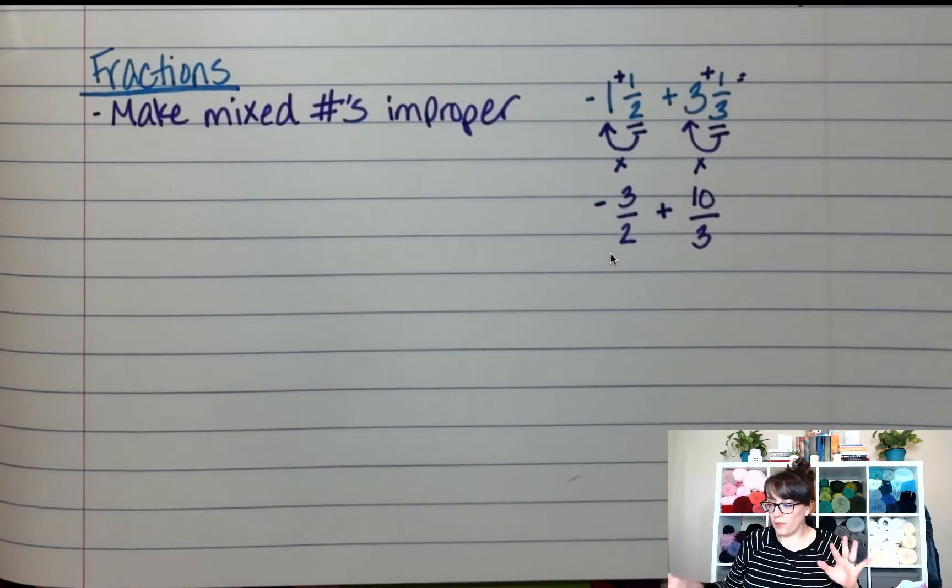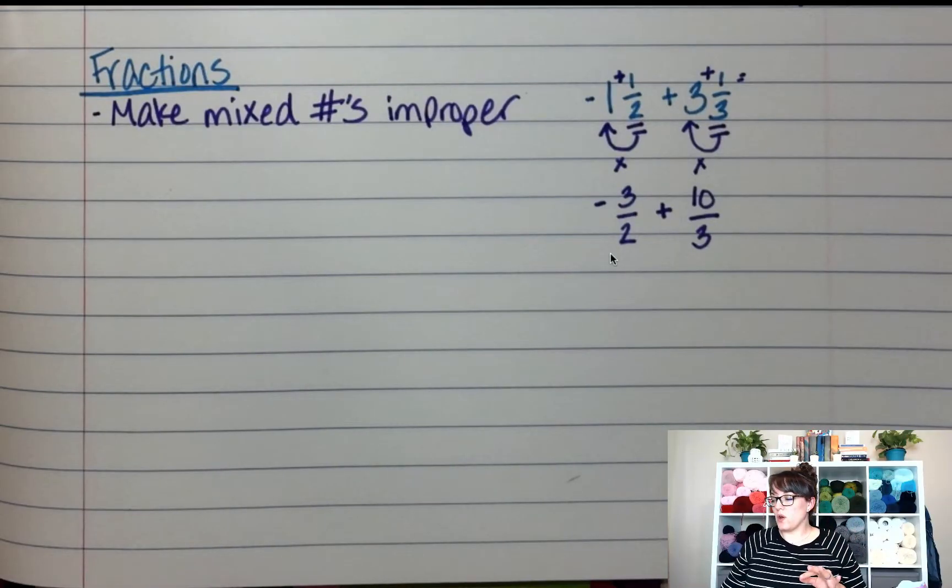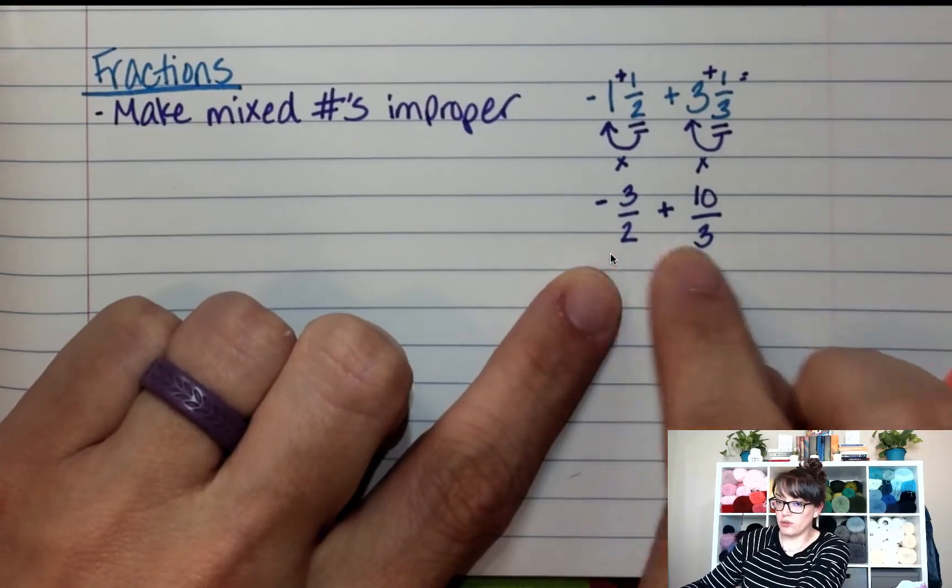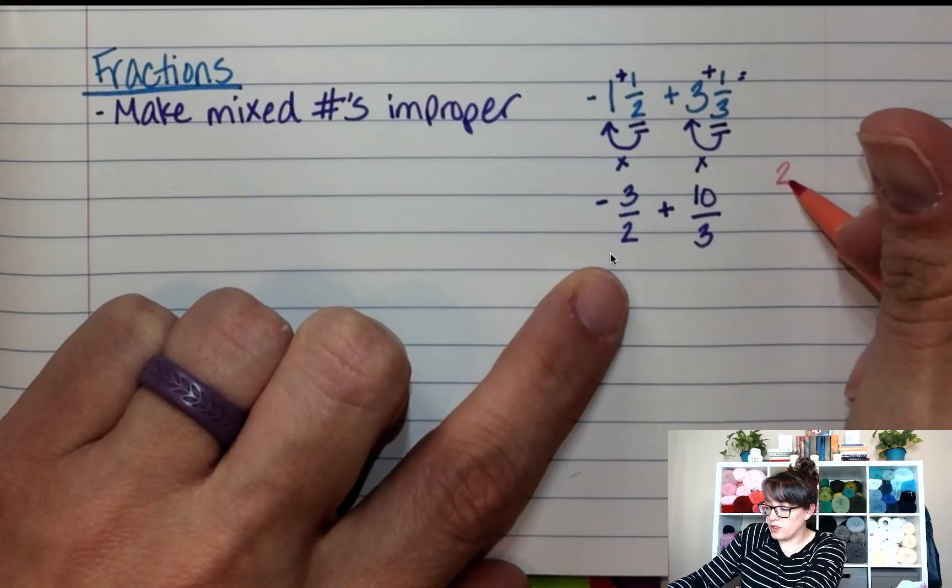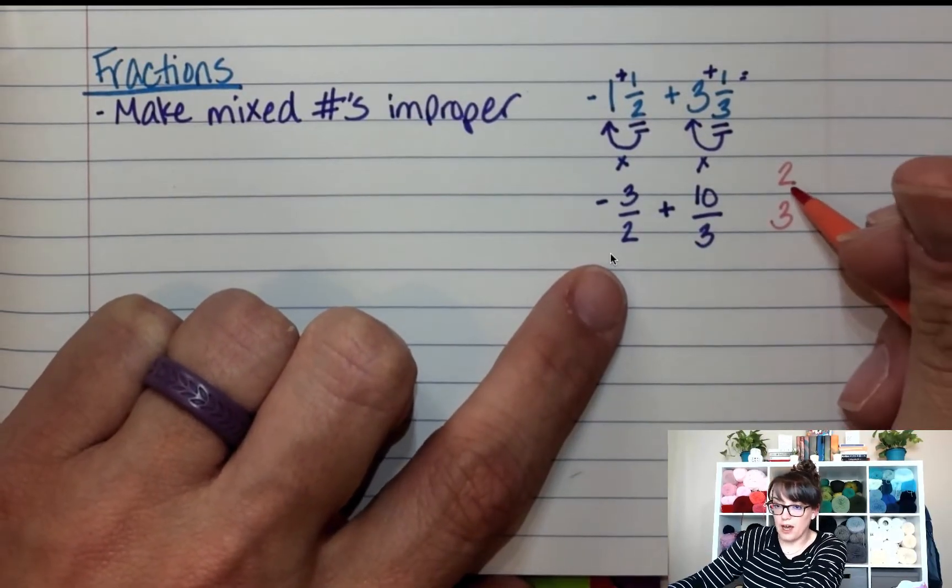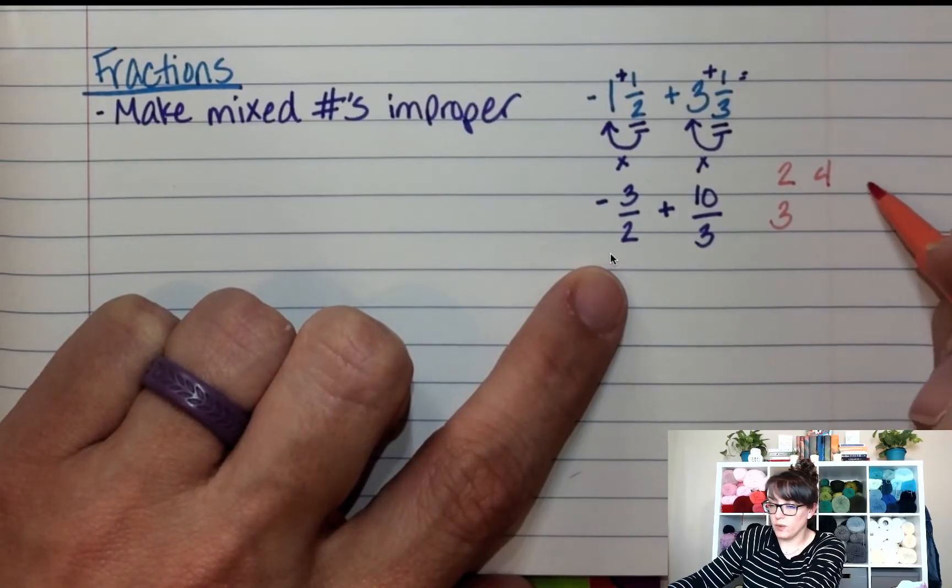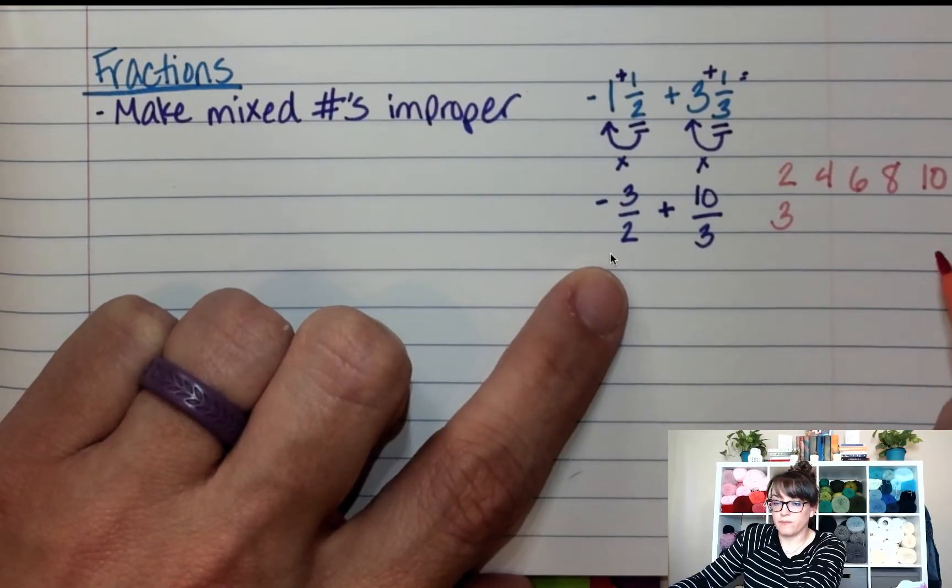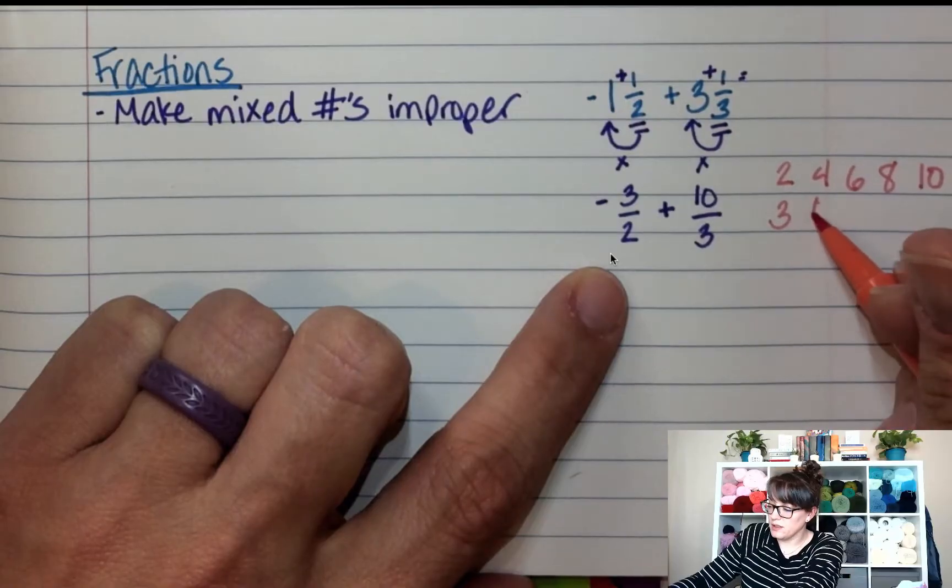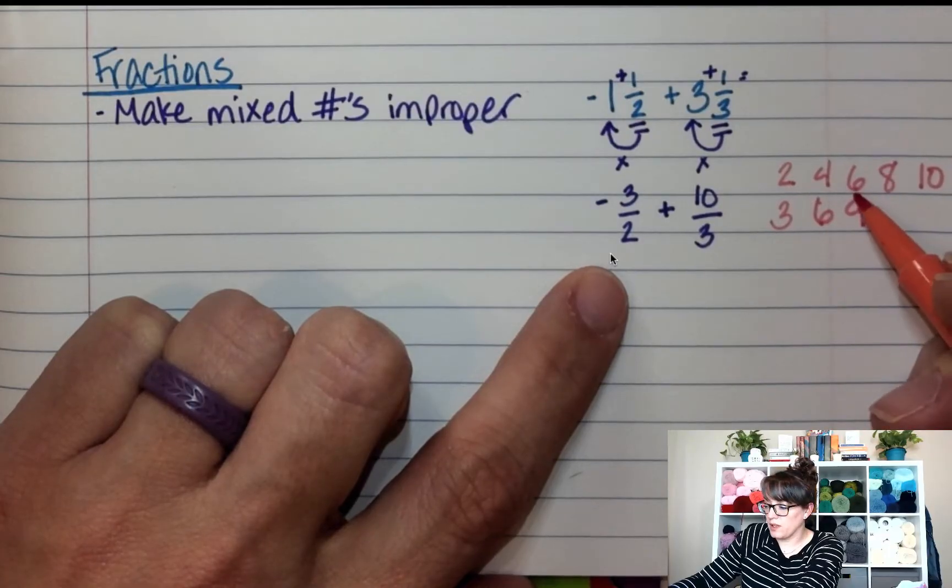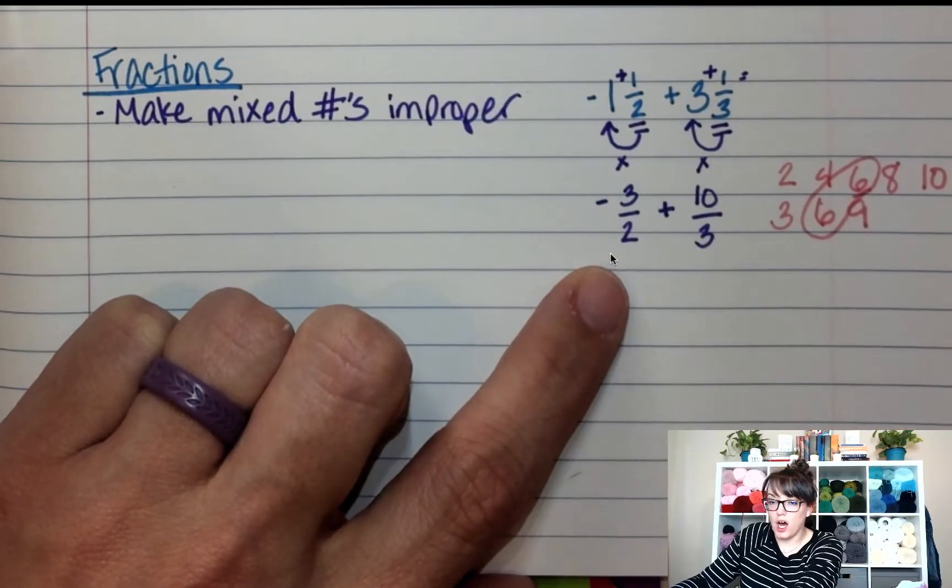So now that we have improper fractions, the next part about fractions, when we're adding or subtracting, they have to have a common denominator. So you have two and three. So if I have a two and a three, this is an easy way to find a common denominator. We're going to count by twos. Two, four, six, eight, ten. And then we're going to count by threes. Three, six, nine. Oh, pause. We have sixes on the top and the bottom. So six is a common denominator.